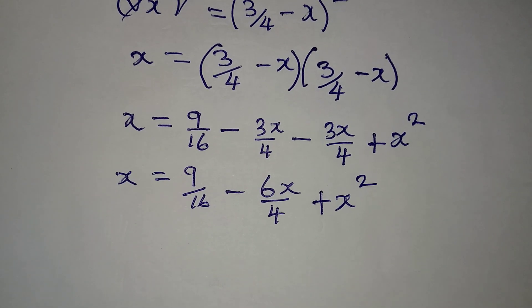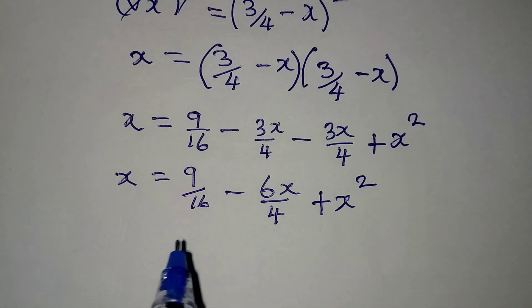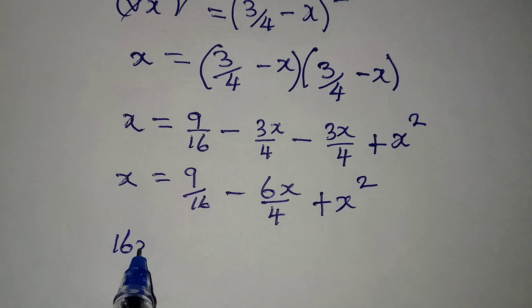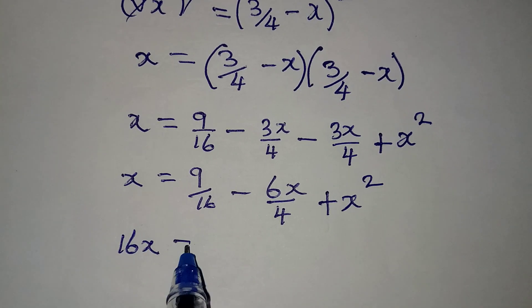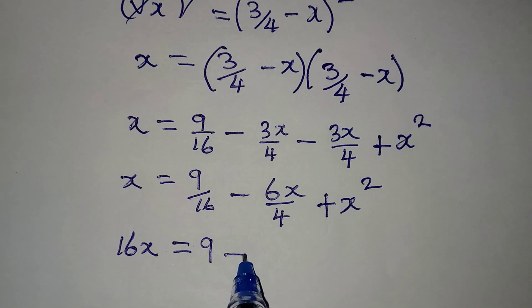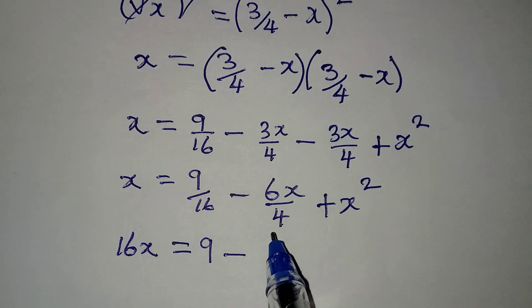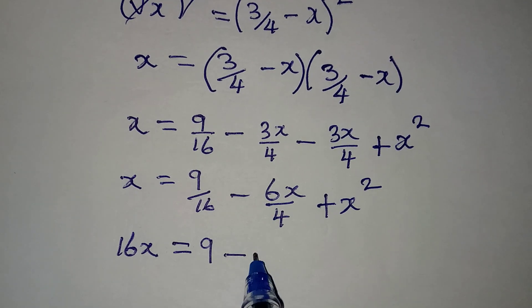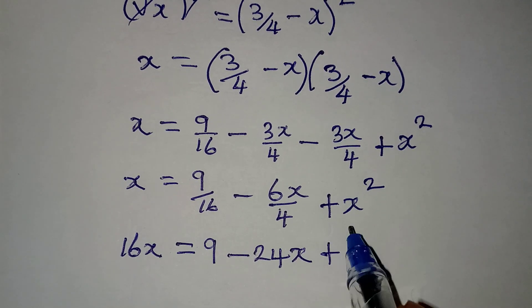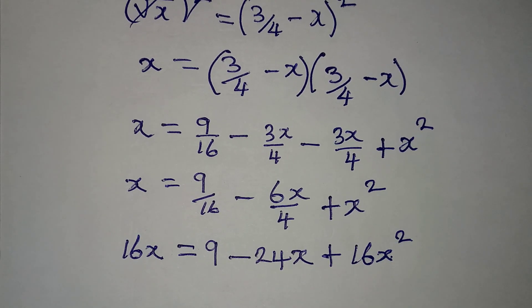And then, from here, let's try to clear out the fraction. The LCM will be 16, so it will be 16 times x, we have 16x, then equal to here, 16 will clear itself, so we have 9, minus 16 divided by 4 is 4, then multiply by 6, that will give us 24x. Then plus here, 16 multiplied by x squared, that will be 16x squared.